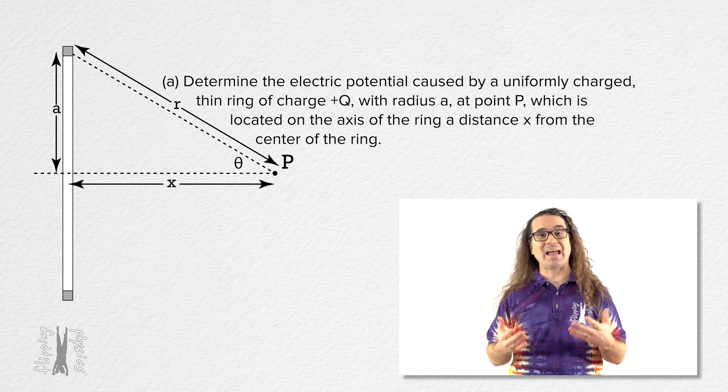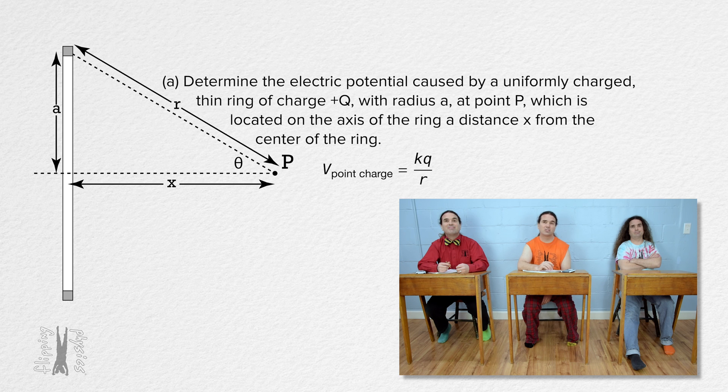Bobby, please determine that electric potential. Electric potential from a point charge equals the Coulomb constant times charge divided by r, the distance from the center of the point charge to the location of the electric potential.